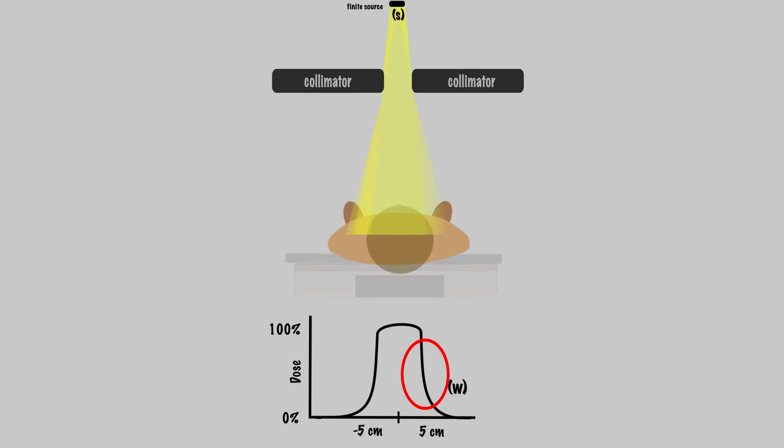If SSD is constant and we increase the SCD by bringing the collimator closer to the patient, our penumbra will actually decrease.